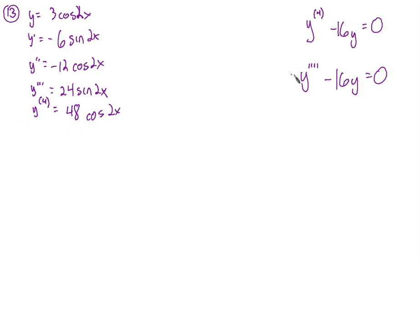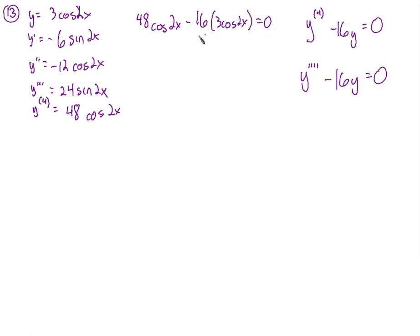Is it a solution to the differential equation? We have y^(4) minus 16y: 48 cosine 2x minus 16 times 3 cosine 2x. That's 48 cosine 2x minus 48 cosine 2x, which equals 0. So this is a solution to that differential equation.